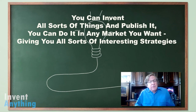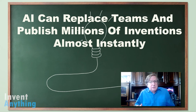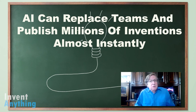You can invent all sorts of things, publish them, and do it in any market you want — giving you the ability to publish in some markets and not in others. This AI capability could be programmed to do something that really impacts the future of patents. If you started having AI machines publish so much that you're stopping lots of patents, the patent system could eventually be threatened — having computers publishing millions of documents a day, creating so much prior art that it becomes impossible to get patents. And the laws of the patent system protect economies. If you impact the patent system, you could impact the economies. Tying AI to Enabled Publications could impact huge economies.